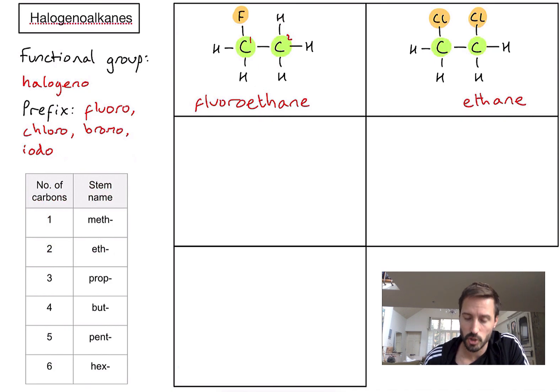I've got two chlorines, so let's number the carbons to give specific details about where they are. I've got a chlorine on carbon one and a chlorine on carbon two. Because there are two chlorines, I don't just write 1,2-chloroethane. I need to write 1,2-dichloroethane. That di makes it clear there are two chlorines, and the numbers indicate exactly where they are.